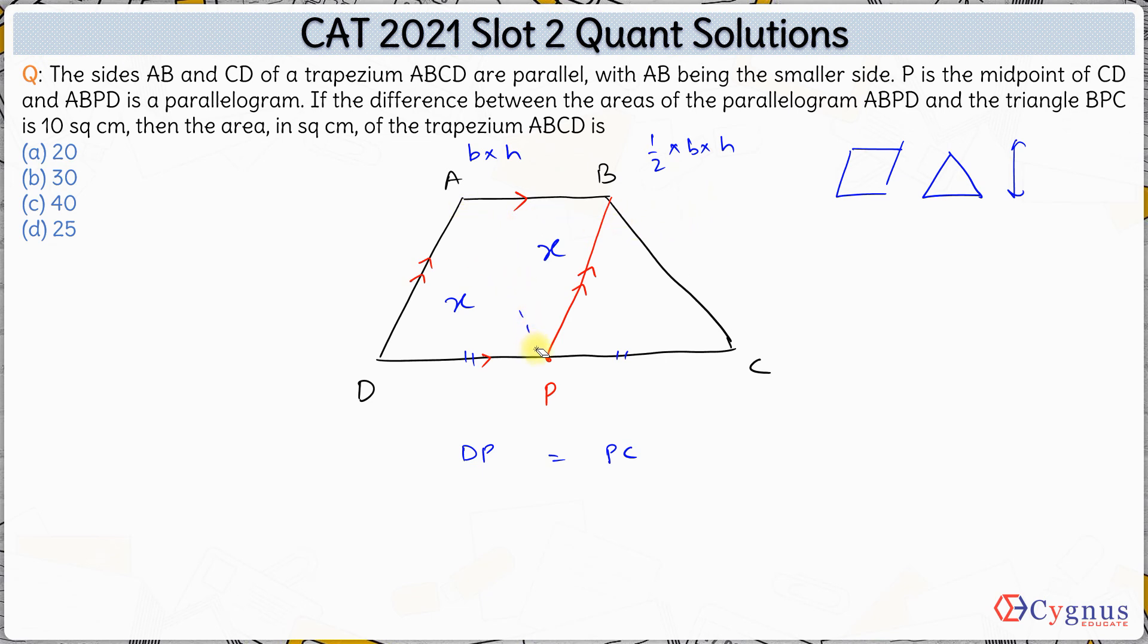So we can simply say, if the area of the triangle is x, area of the parallelogram will be twice of x. And the question says the difference in this area, 2x minus x is 10. That means x is equal to 10.